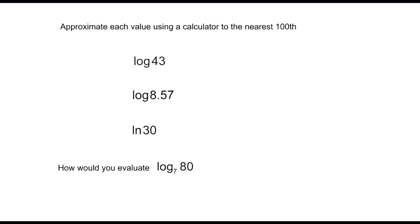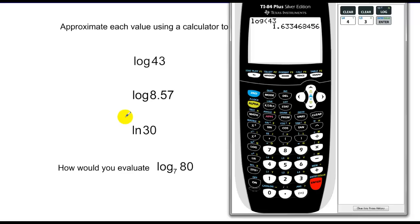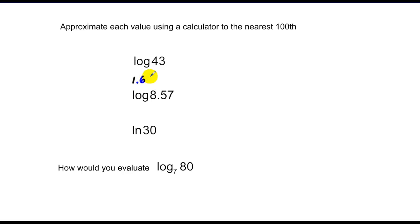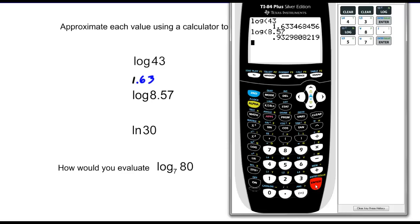We can use our calculator to do a lot of this — just pop the button. The only problem with calculators is that they give us approximations, so we're going to round to the hundredths. The log of 43 — there's no base associated with it on the calculator — gives a value of 1.63. Similarly, the log of 8.57 gives 0.93.